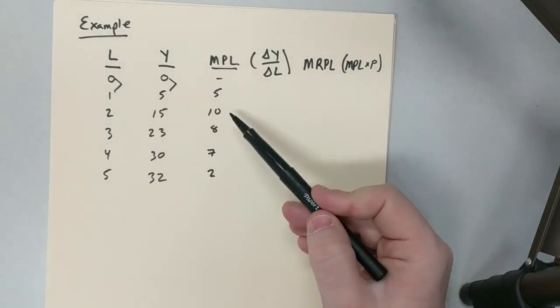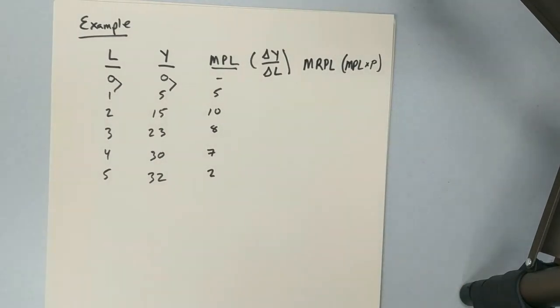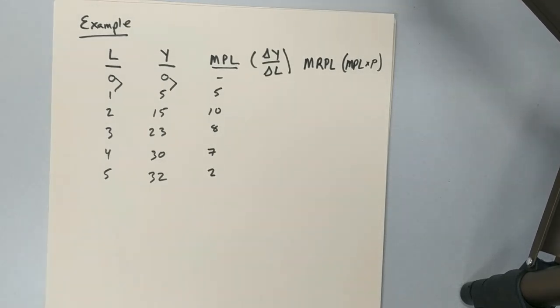You can see at first we may have some increasing returns. That might make sense. Let's say this is in a Starbucks and the first person you hire has to do a ton of stuff. They can't really specialize. Now the second one, they can specialize in things. So you might actually see some increasing marginal returns. Usually in the models that we're going to have in this class, we're only going to see the decreasing marginal returns.